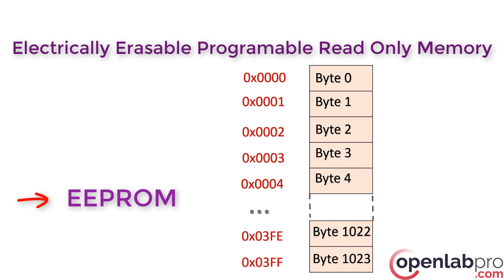Erase and write operations are performed byte per byte. EEPROM is a distinct type of flash memory that can store larger capacity data bits or program bits than conventional EEPROM devices.